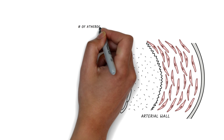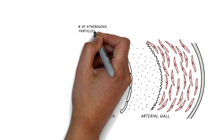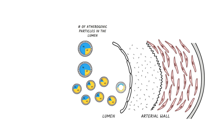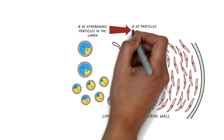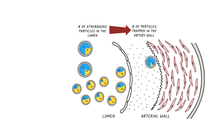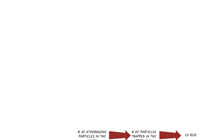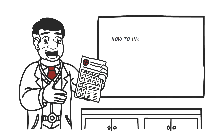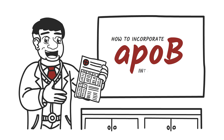In the first video in this series, we saw that the more ApoB particles there are in the lumen, the more ApoB particles enter the artery, the more ApoB particles get stuck in the artery, and the higher the risk of atherosclerosis. In this video, we'll talk about how to incorporate ApoB into clinical care and we'll look at some examples.